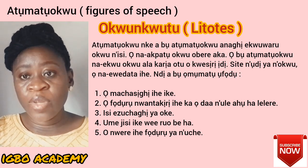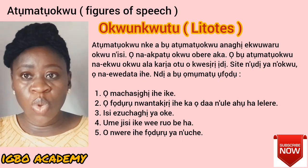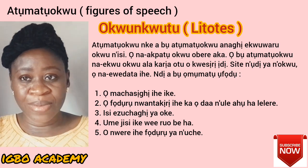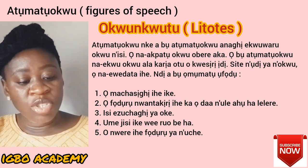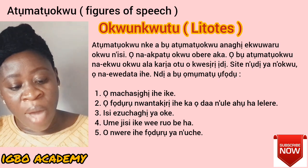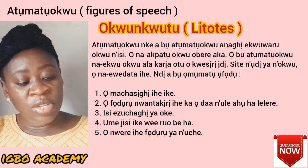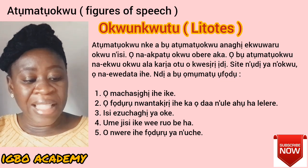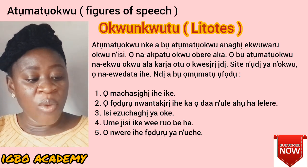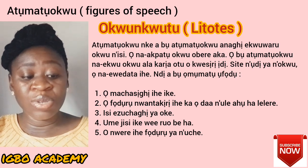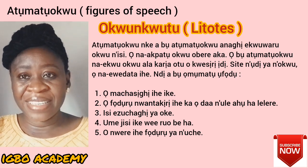Litotes in Igbo language is called Oku Nkutu. Oku Nkutu means to bring a sentence down — to bring the meaning of a sentence down. So if you're listening, Atomantoku Nkaba — Atomantoku anahi e kuwaru oku nisi. This litotes, Oku Nkutu, is to bring down the meaning of a sentence.